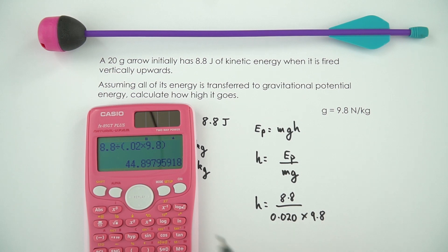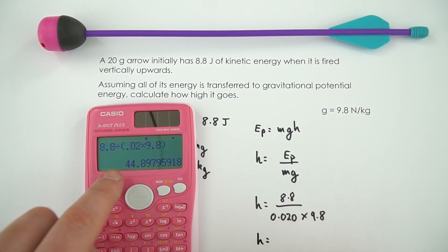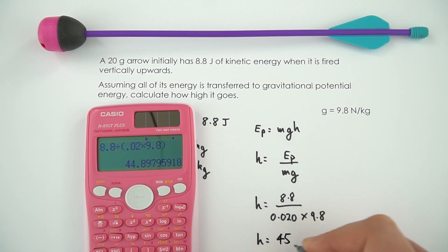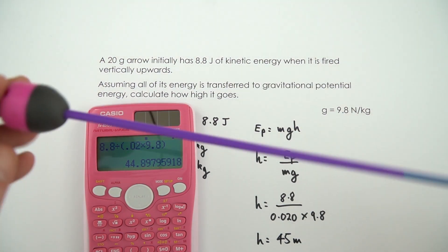This gives a value of 44.897. I'm going to give my final answer to two significant figures, like my raw data, so the height is rounded up to 45 metres. That's how high this arrow would go.